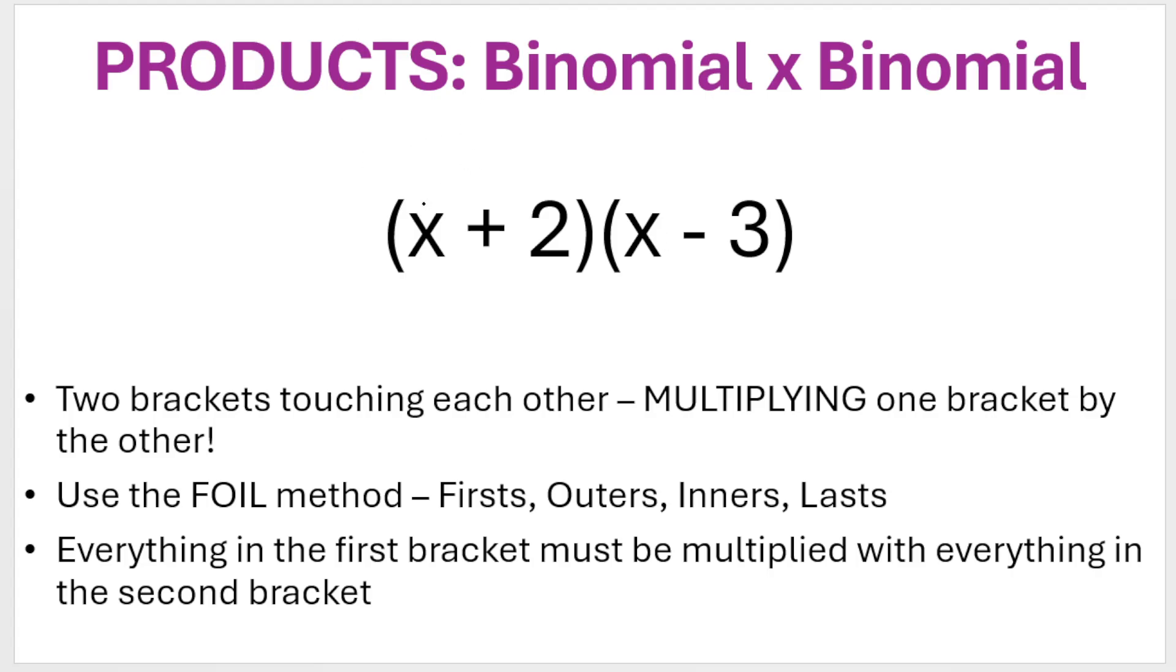So what I mean by that is the x in the first bracket needs to be multiplied by the x and by the negative three. So everything in the first bracket, both things in the second bracket. Then the plus two needs to be multiplied by both things in the second bracket. That's very important. So essentially I have four little arrows going on here. Technically four separate little multiplication sums. Let's do it.